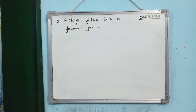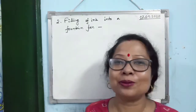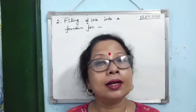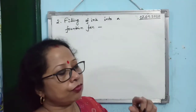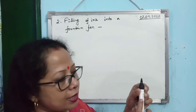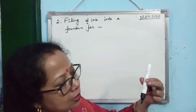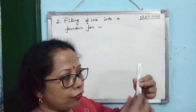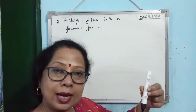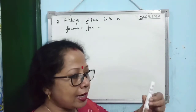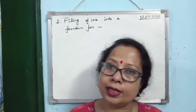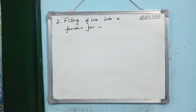Filling ink into a fountain pen works the same way. The nib is dipped in ink. The pen has a rubber portion — you squeeze it, forcing air inside the tube to come out. Atmospheric pressure acts on the ink outside, creating high pressure, while inside there is low pressure. So ink enters from high pressure to low pressure, filling the fountain pen.